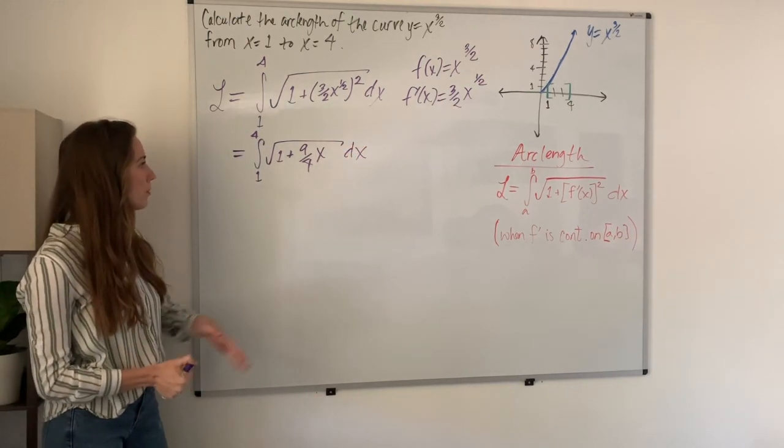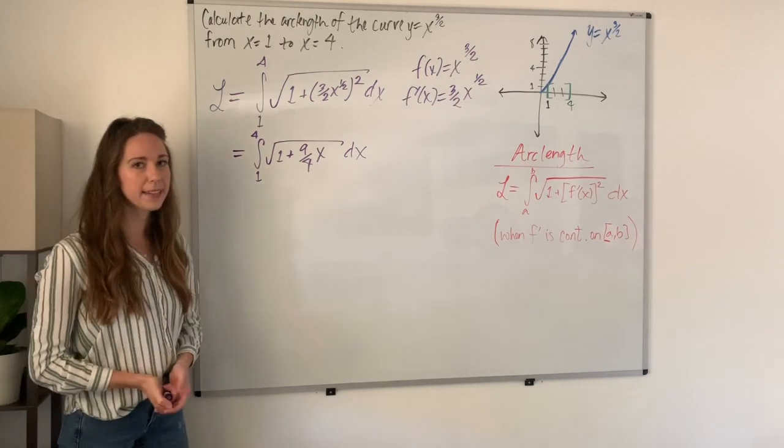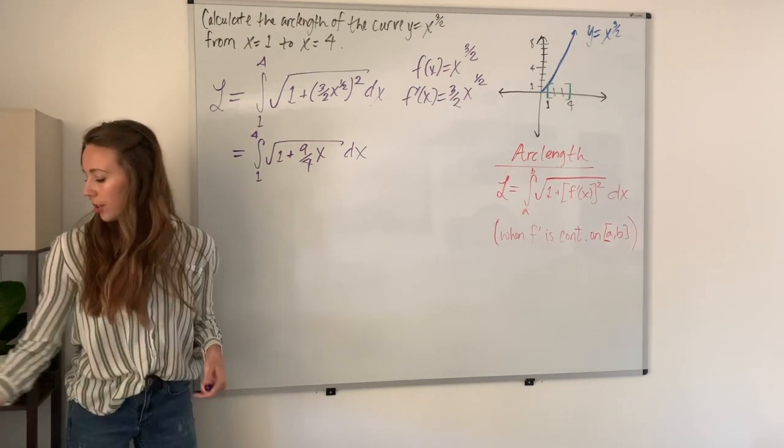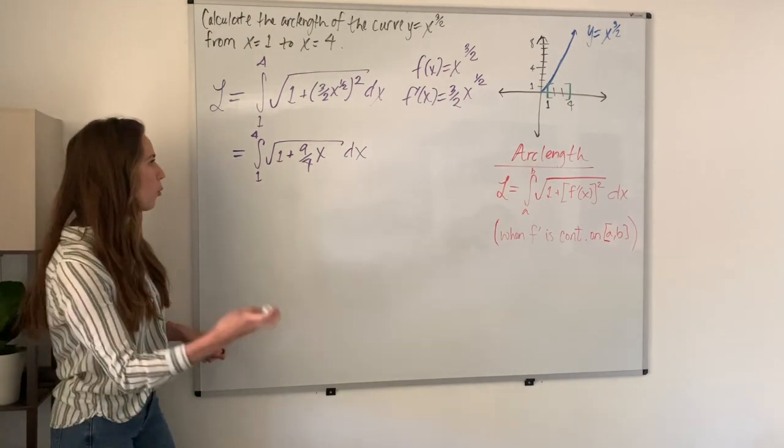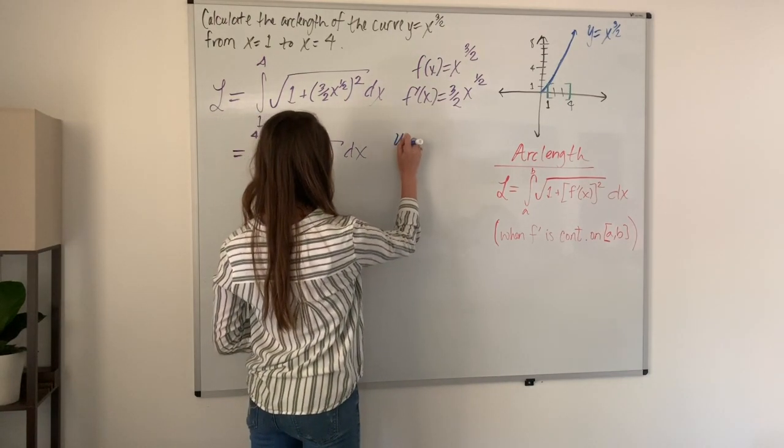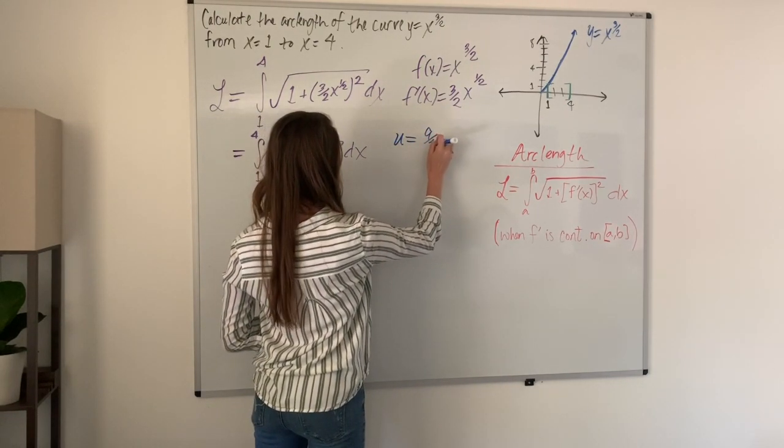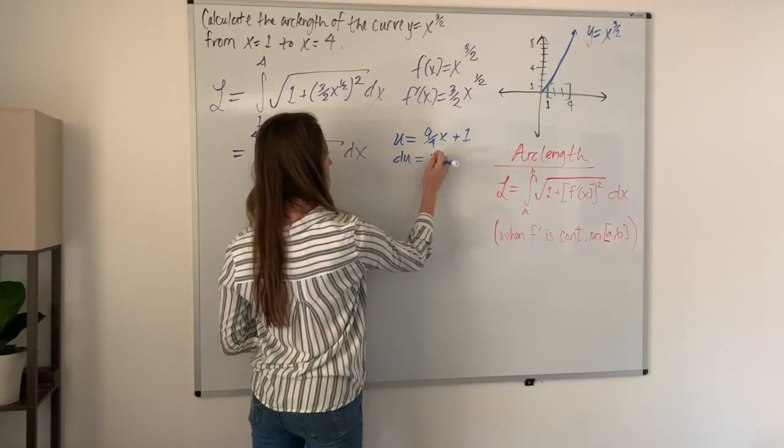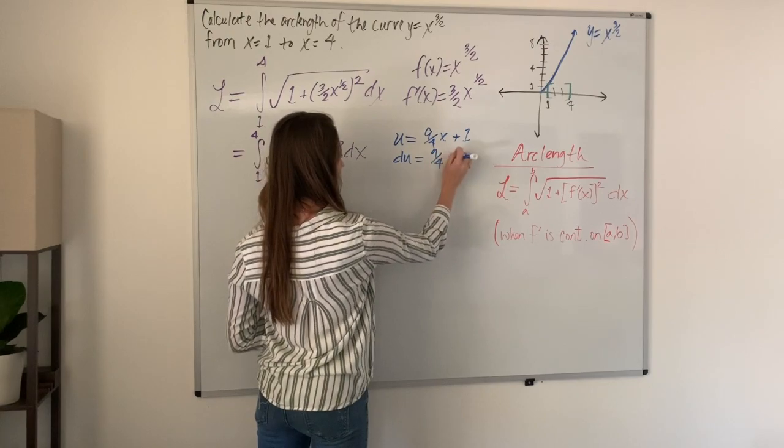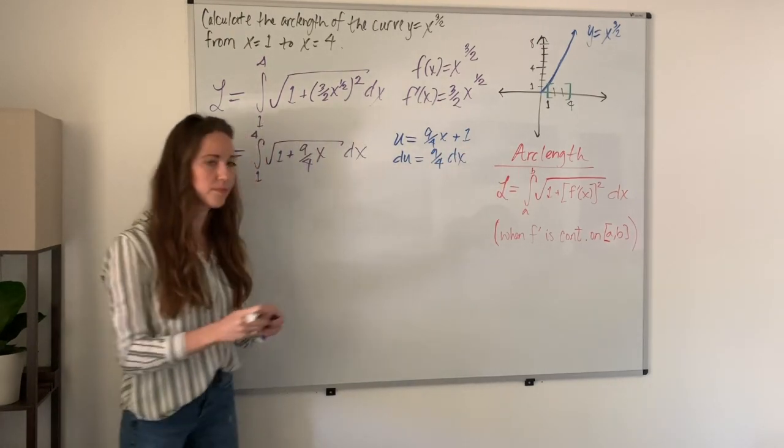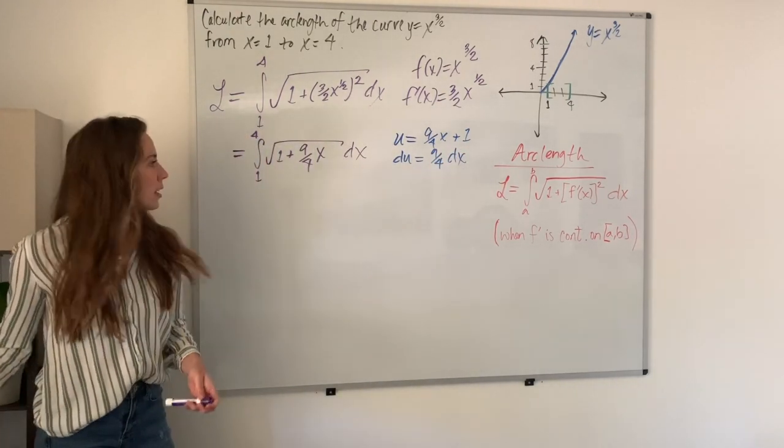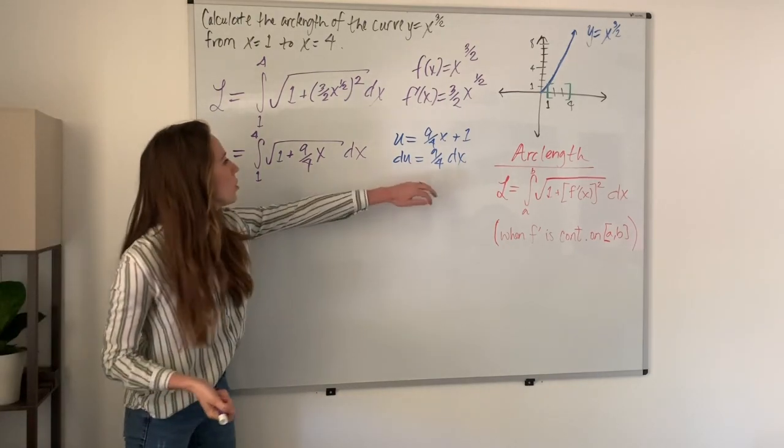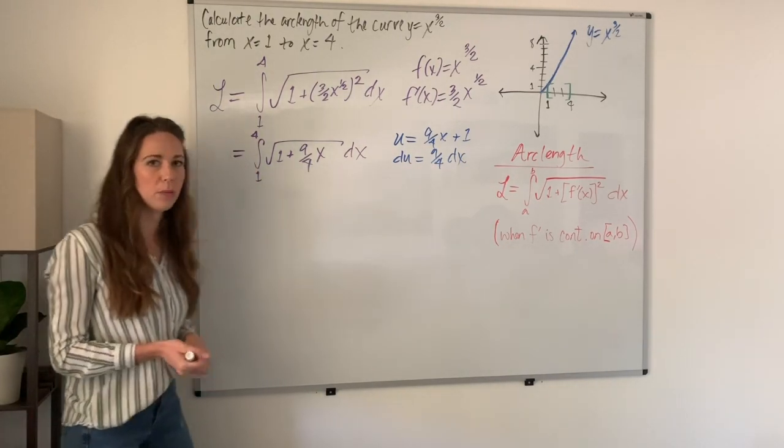Here you'll recognize that we need to use u substitution. We'll pick for our u, 9 over 4x plus 1. That makes our du just 9 over 4 dx. We need to divide by 9 fourths on both sides, and we get 4 over 9 times the integral.